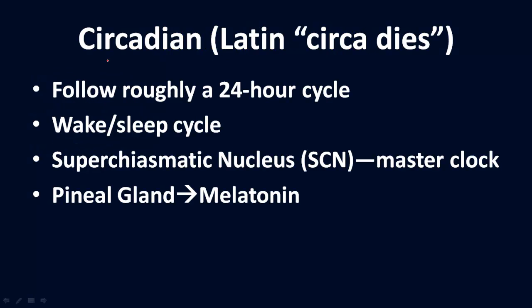Circadian rhythm comes from the Latin 'circa dies,' which means about a day or approximately a day, and it follows a 24-hour or so cycle. The best example we're familiar with is the wake and sleep cycle. Brain functions include the suprachiasmatic nucleus, or SCN, which is the brain's master clock that helps regulate the rest of the body and brain in terms of waking and sleeping.